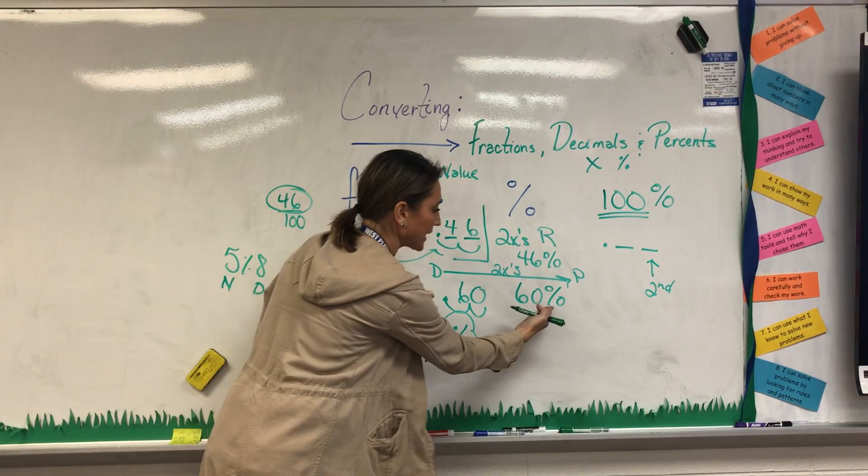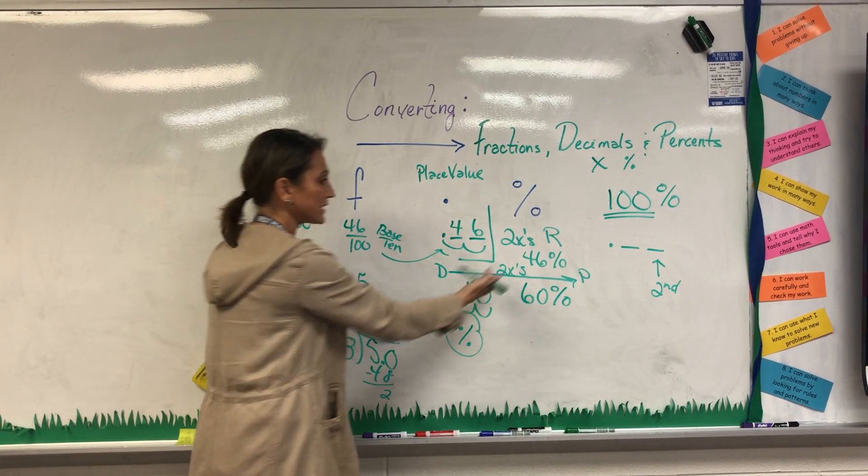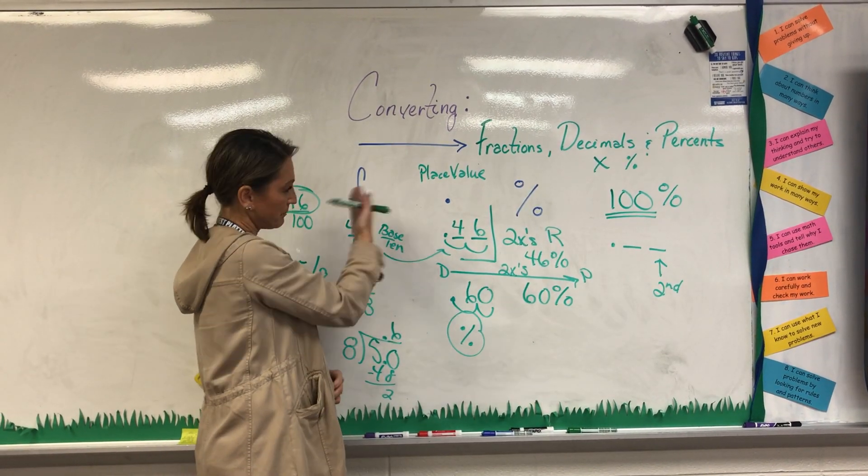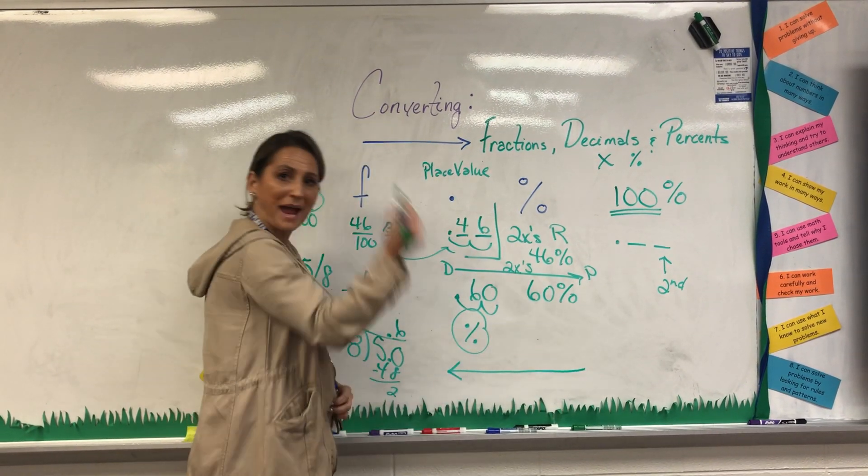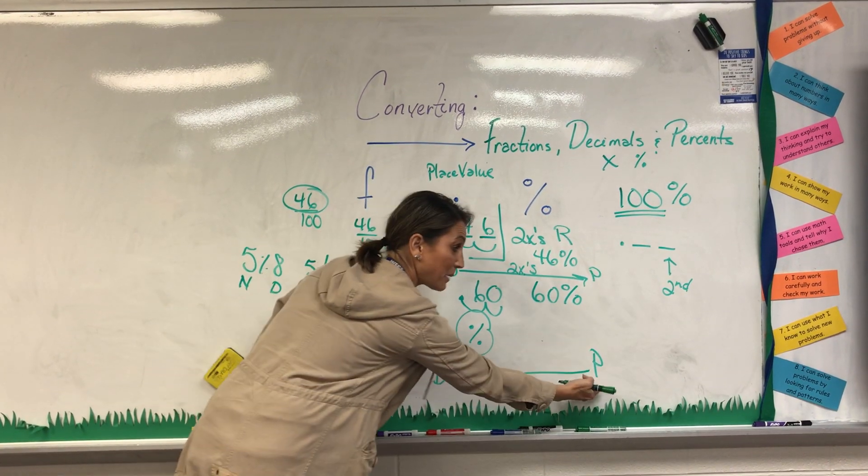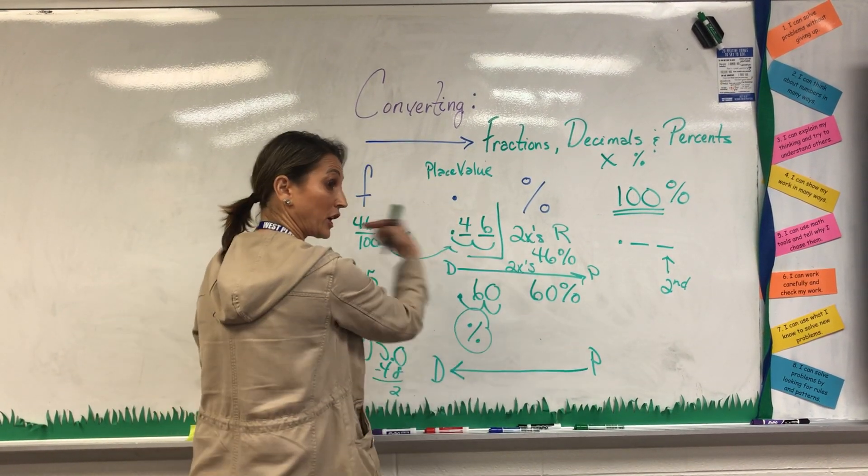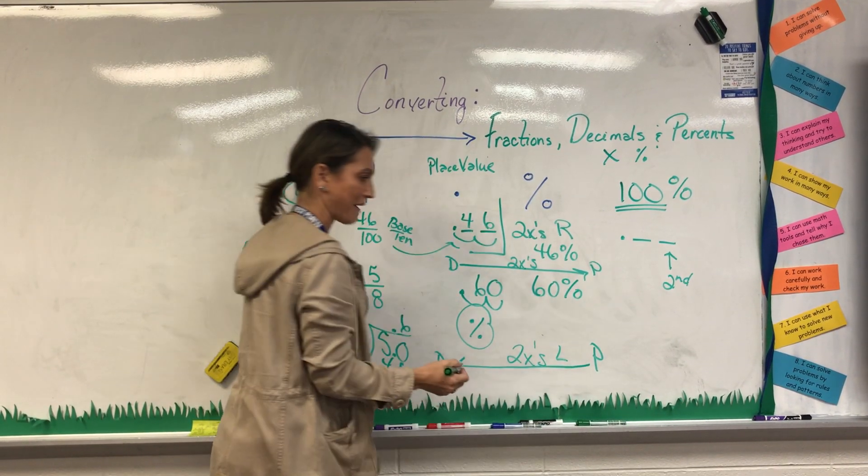What happens though if I want to convert this back? I want to take 60% back to a decimal and 46% back to a decimal. Well, it would seem logical that I would just move it back the other way. A percent back to a decimal, P back to the D, going left. So I move the decimal two times to the left.